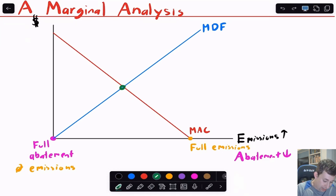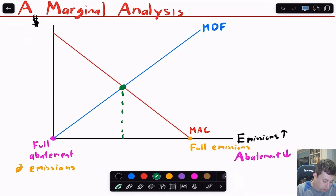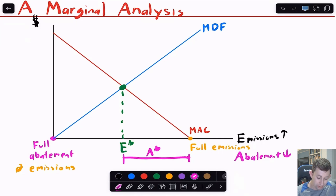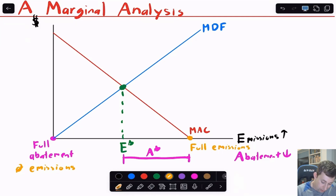Looking at this graph, when these two curves touch, this is probably the optimal level of emissions — we're going to call this E-star. The difference between full emissions and E-star is A-star. Now we have to think about what happens without this perfect world. The factory has no incentive to clean up their pollution, especially because reducing or abating their emissions is costly, so we probably wind up at full emissions.